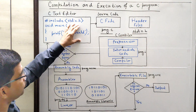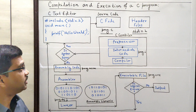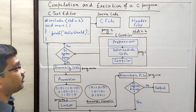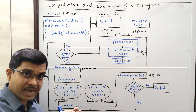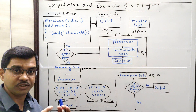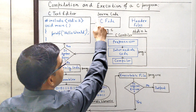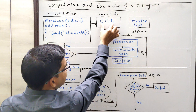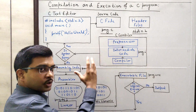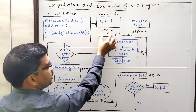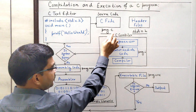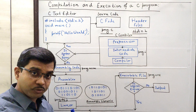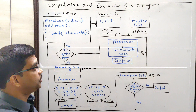So this is the source file. Whenever you have written the C program, you have to save this file first. Since it is a C program, it has to be saved with the extension .c. So this is the C file — the source code is being saved with the .c extension. Suppose the name of the program is "program," so we are saving it as program.c, where our source code has been saved.